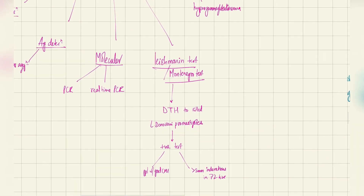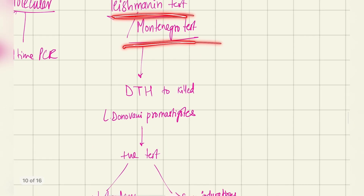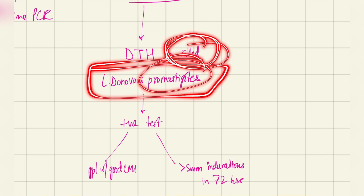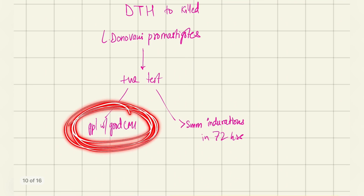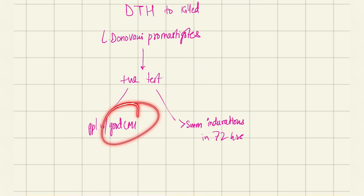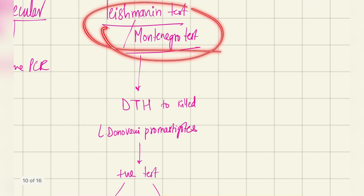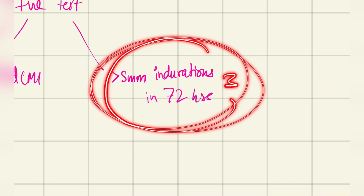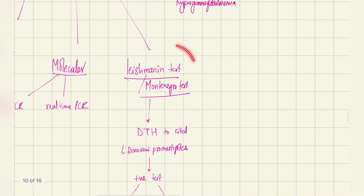A very important test is the Leishmanin test (Montenegro test): a delayed-type hypersensitivity reaction to killed Leishmania donovani promastigotes. A positive test indicates good cell-mediated immunity with interferon-gamma killing the promastigotes — as discussed in pathogenesis. A positive result shows more than 5 mm of induration within 72 hours (3 days) at the test site.